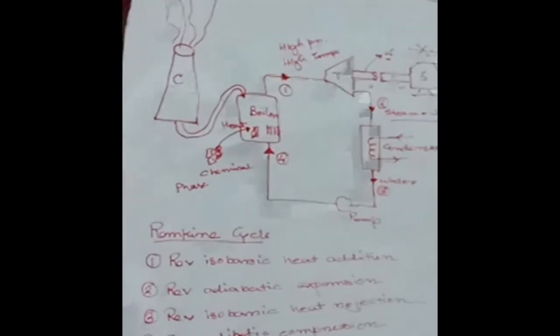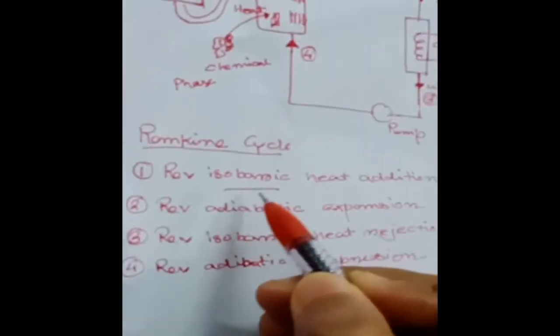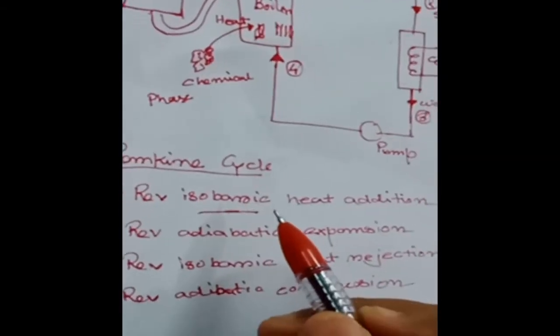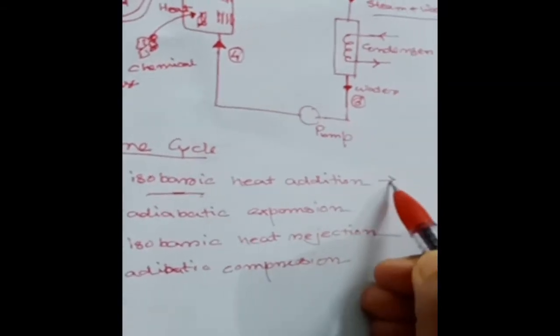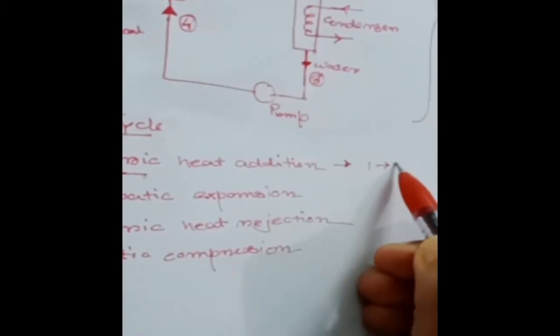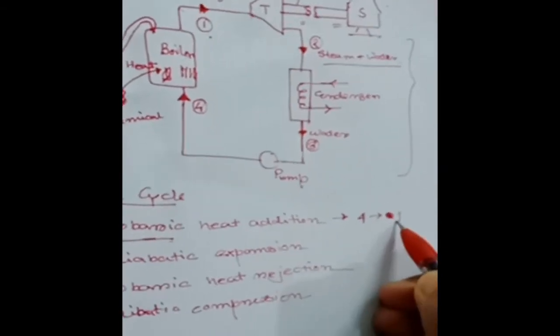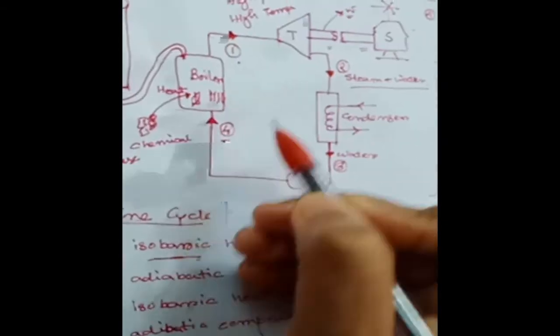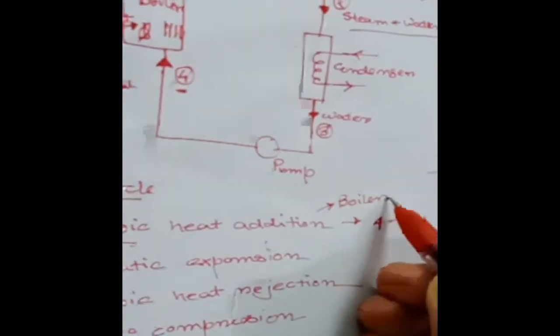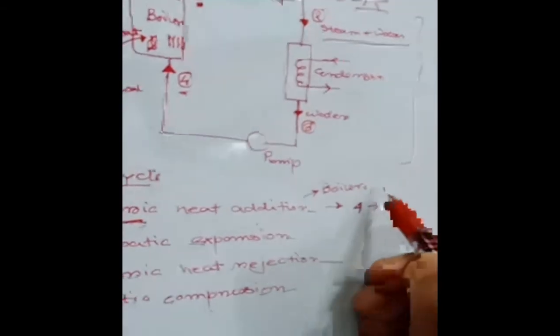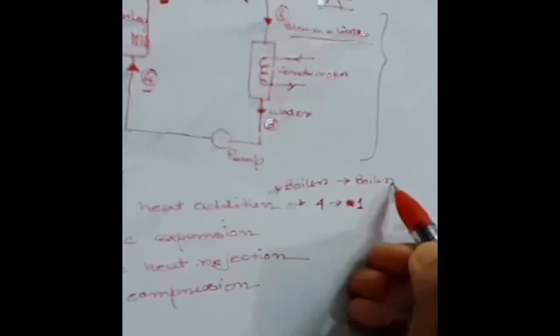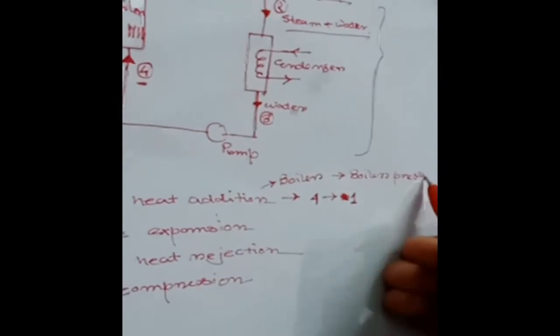I already explained this in the thermodynamics class, but I am telling you for recapitulation. The reversible isobaric heat addition takes place in the boiler from process step four to one. Isobaric means the pressure remains constant, and in this process the pressure is termed as boiler pressure.